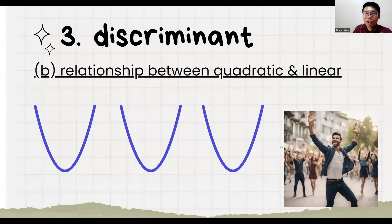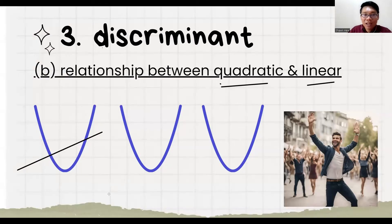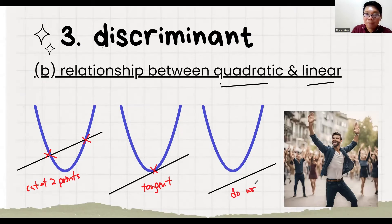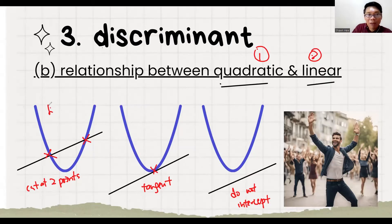The last technique is identifying the relationship between a quadratic and a linear equation. There are three situations. First, the straight line cuts through the quadratic at two points. Second, the linear equation just touches the quadratic at one point — this is a tangent. Third, the linear does not touch the quadratic at all — they do not intersect. After identifying the situation, we join the two equations into one, find a, b, and c, then apply: b-squared minus 4ac greater than 0 for two intersection points, equals 0 for tangent, and less than 0 for no intersection.